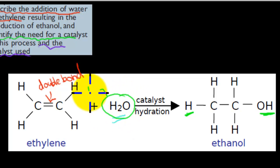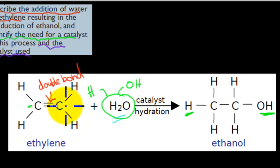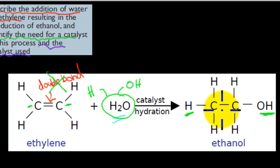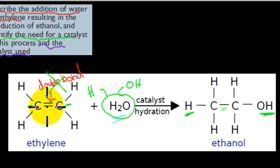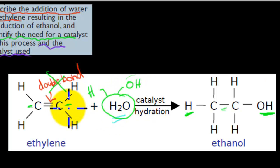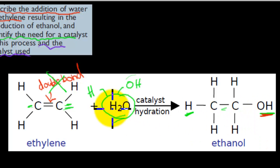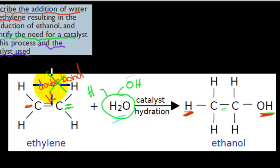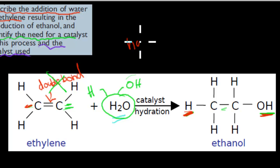One hydrogen from H₂O will go on one side and the OH group will go on the other side. In the process, the double bond breaks — you can see there's no double bond on the ethanol side. So ethylene plus water breaks this double bond; the OH group from water attaches on one side and the leftover hydrogen attaches on the other side. This reaction is called a hydration reaction.